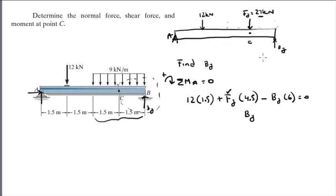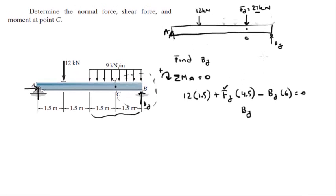When you solve for By, we get that By equals 23.25 kilonewtons.